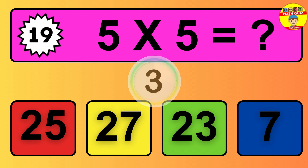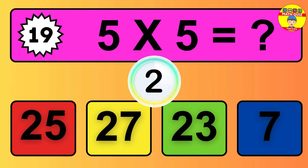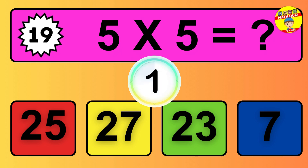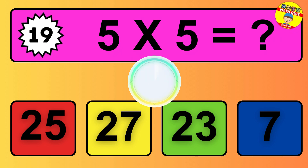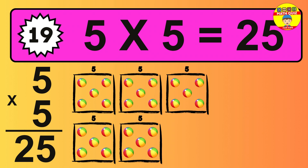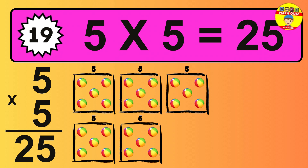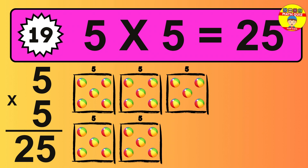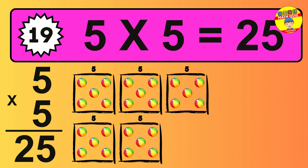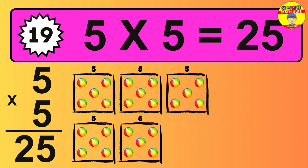Question 19. 5 times 5 equals what? The answer is 5 times 5 is 25. To calculate, we have 5 groups with 5 balls each one. So how many balls do we have? 25 balls.